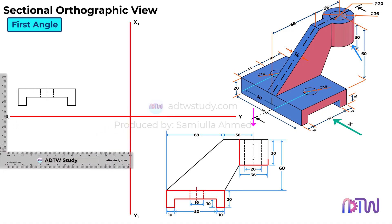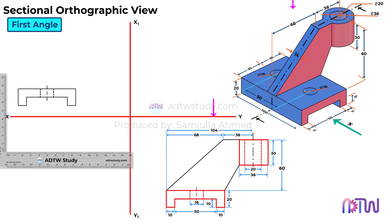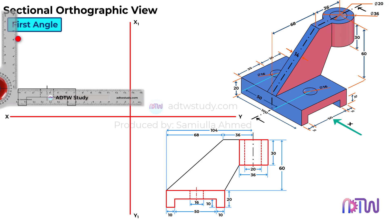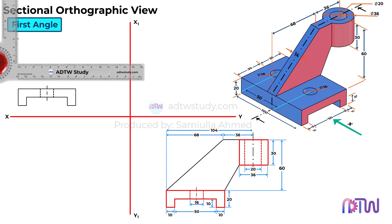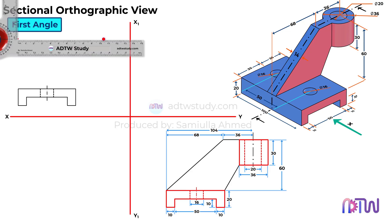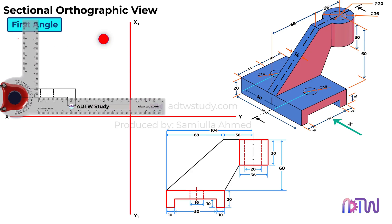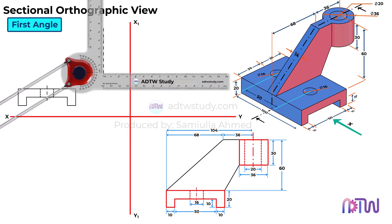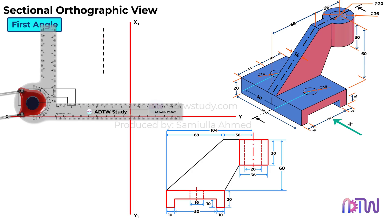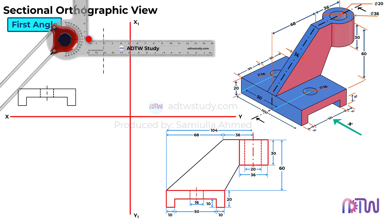Next, let's draw the hollow cylindrical portion of the object. The outer diameter of this cylinder is 36 mm and its height is 30 mm. It is positioned 60 mm above the base, with its center located 104 mm away from the left corner of the base. To begin, take a drafter and mark a point at 60 mm vertically from the base. Then, from the left corner, mark another point at 104 mm horizontally. This point represents the center line of the hollow cylinder. Now, draw the center line as shown. Since the outer diameter of the cylinder is 36 mm, mark 18 mm on either side of the center line.